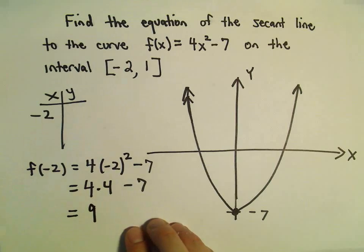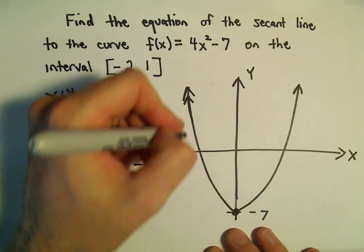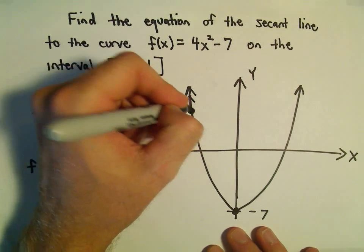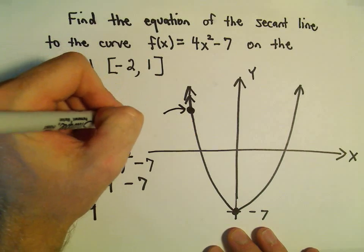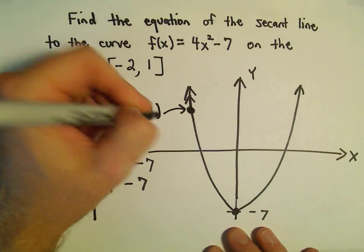Which will give us a positive 9. So sitting over here somewhere on our graph, maybe at random, this would be the point (-2, 9).